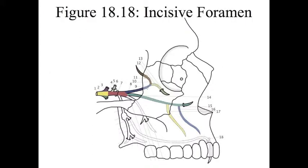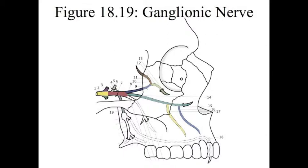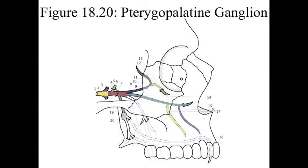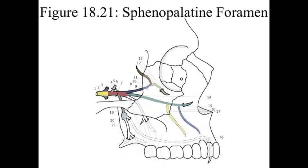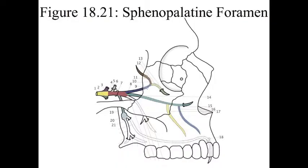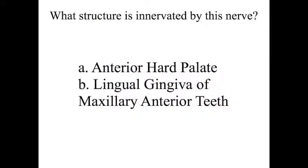Number 18 is the incisive foramen. Number 19 is the ganglionic nerve — it acts like a rope that's holding up number 20, the pterygopalatine ganglion. The pterygopalatine ganglion has a lot of branches and all of them have the phrase palatine in them. Number 21 is the sphenopalatine foramen. Number 22, the nasopalatine nerve, is the first branch off the pterygopalatine ganglion. It innervates the anterior hard palate and the lingual gingiva of the anterior maxillary teeth. The nasopalatine nerve can be anesthetized for dental treatment.